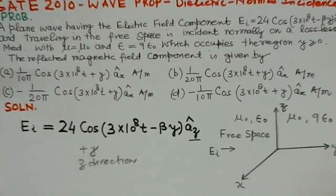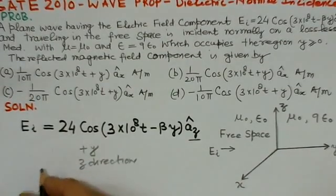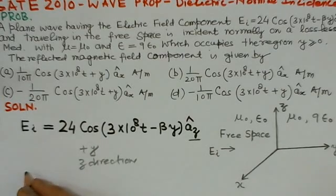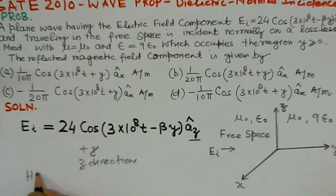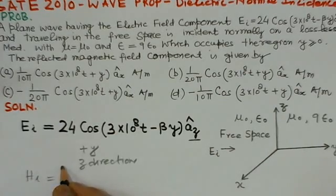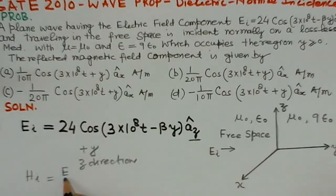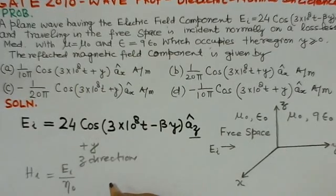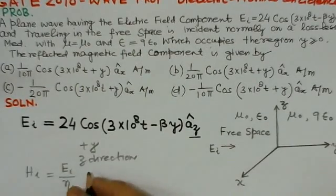What we have to find: the value for Ei is given and we have to find the reflected magnetic field component. So first we should find the incident magnetic field component. We can write Hi could be formed from the electric field, that is Ei over η0, the free space intrinsic impedance.